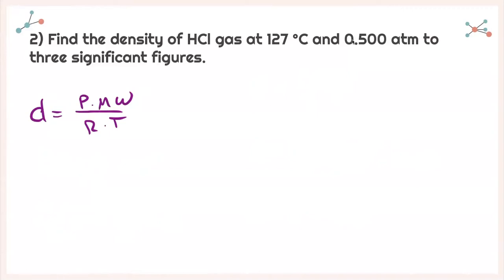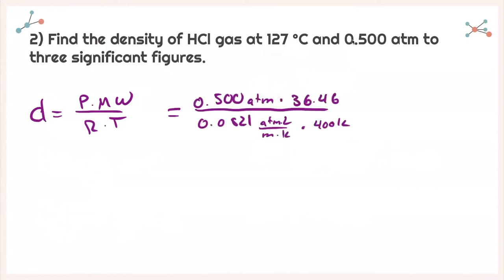Before we plug anything in, the temperature is in Celsius, so I need to make sure it's in Kelvin. Plugging in all correct values: 0.500 atmospheres times 36.46 grams per mole, divided by 0.0821 times 400 Kelvin. Plugging all of that into my calculator, I get a density of 0.555 grams per liter.